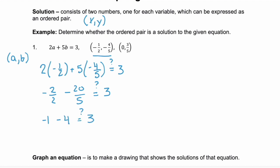Is negative one minus four equal to three? No, because negative one minus four is negative five. And negative five does not equal three.